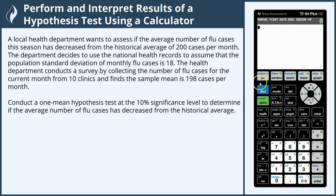Hi everyone. In this video, we're going to perform and interpret results of a hypothesis test using a calculator. A local health department wants to assess if the average number of flu cases this season has decreased from the historical average of 200 cases per month. The department uses national health records to assume the population standard deviation of monthly flu cases is 18. The health department collects flu cases from 10 clinics and finds the sample mean is 198 cases per month. We'll conduct a one-mean hypothesis test at the 10% significance level.